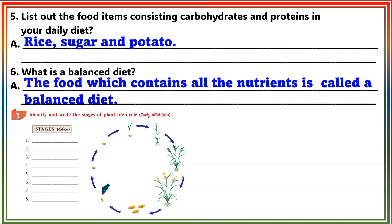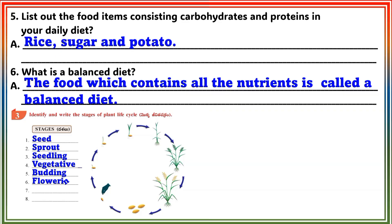Section 3: Identify and write the stages of the plant life cycle. Answer: Stages of plant life cycle are Seed, Sprout, Seedling, Vegetative, Budding, Flowering, Ripening.